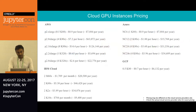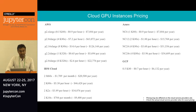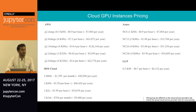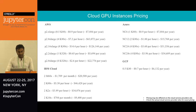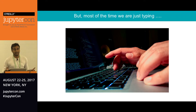GPUs are not cheap. Looking at cloud instance pricing on AWS, half a K80 costs about $8,000 per year, and eight K80s costs about $130,000 per year — it quickly keeps adding up. But most of the time we're just typing. We get a machine, sit and type, and while the GPUs are sitting idle they're not really being used. Even the application runtime is still using CPUs most of the time.